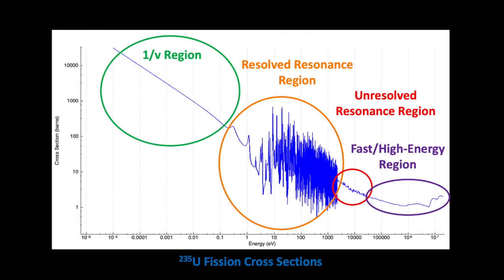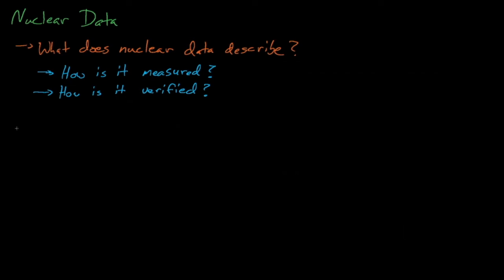Some physicists disagree that this is the high energy region because they feel that high energy involves particles with GeV of energy, but most fission systems nuclear engineers consider the MeV range to be high energy. So that's what nuclear data looks like, but how do we actually obtain it? It turns out that getting nuclear data involves a combination of theory and nuclear data measurement.